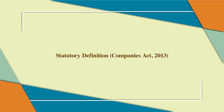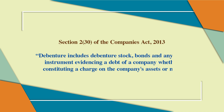The statutory definition of debenture as provided in the Companies Act 2013 is found in section 2, clause 30. It states: 'Debenture includes debenture stock, bonds, and any other instrument evidencing a debt of a company, whether constituting a charge on the company's assets or not.'